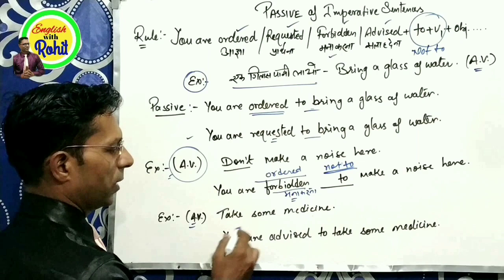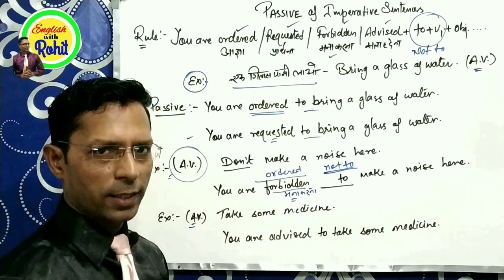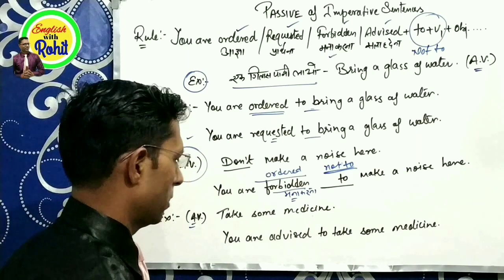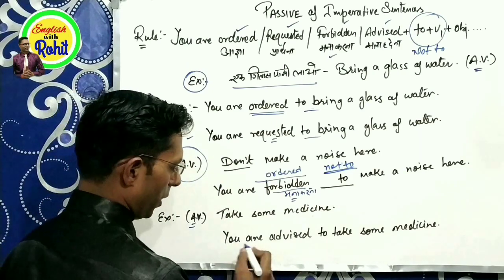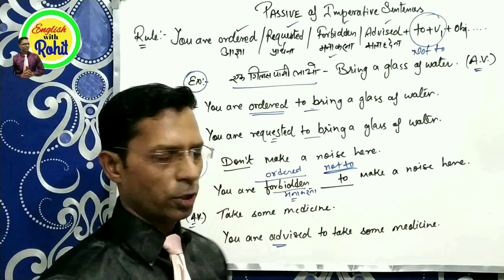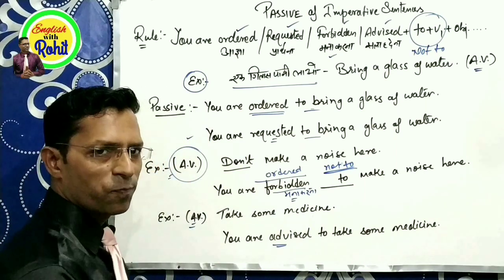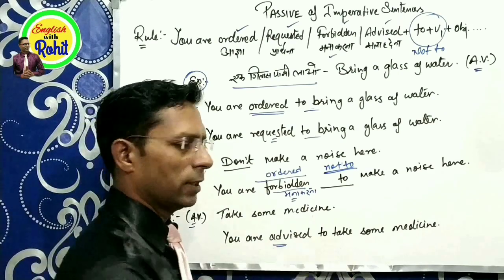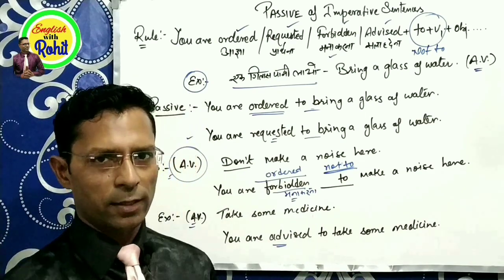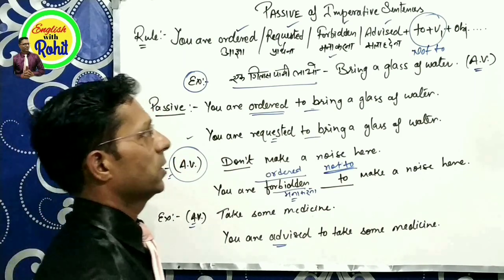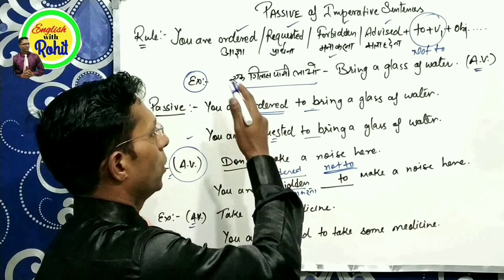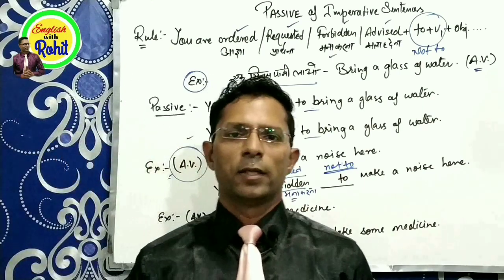Next sentence: 'Take Some Medicine' — we are giving advice, like 'bhai, thodi dawaai le lo.' In Passive Voice, we say: 'You are Advised To Take Some Medicine,' meaning advice is being given to you. So for Passive Voice of Imperative Sentences, use: You are Ordered, Requested, Forbidden, or Advised, etc.